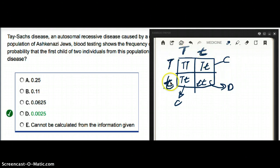So the chance of two heterozygotes producing an offspring with Tay-Sachs is going to be one-fourth, which is also equal to 0.25.